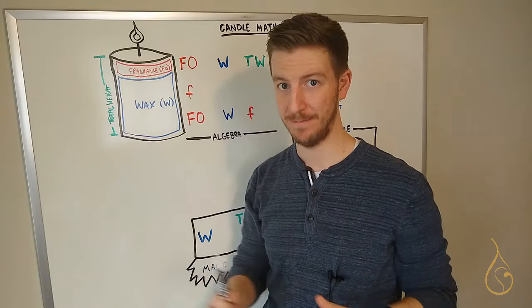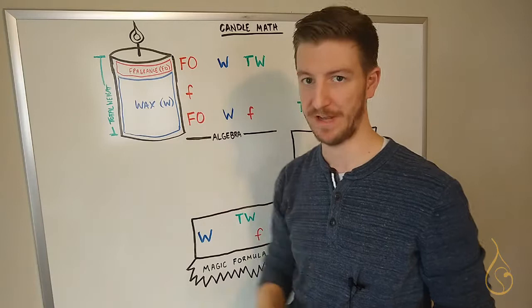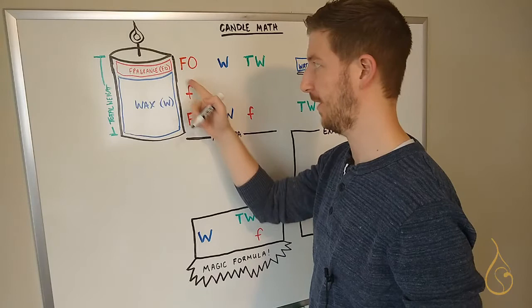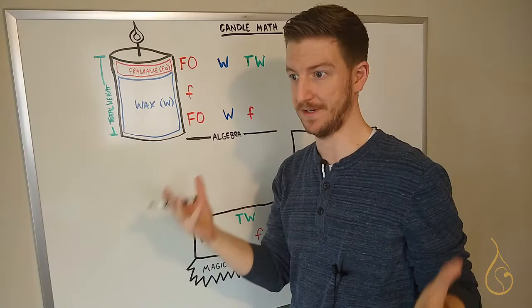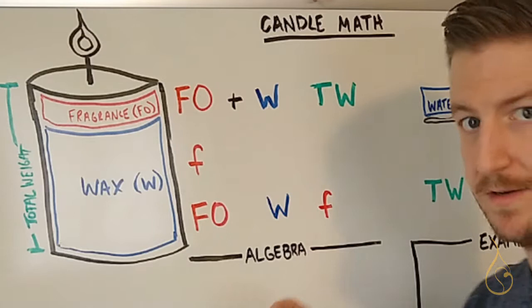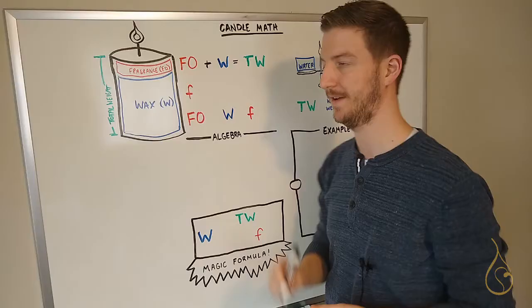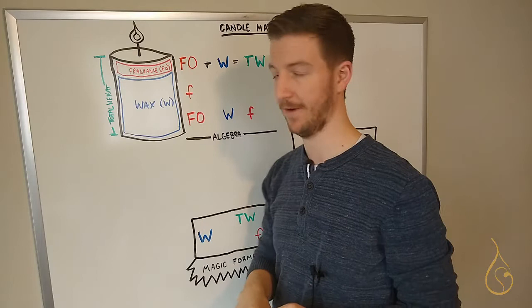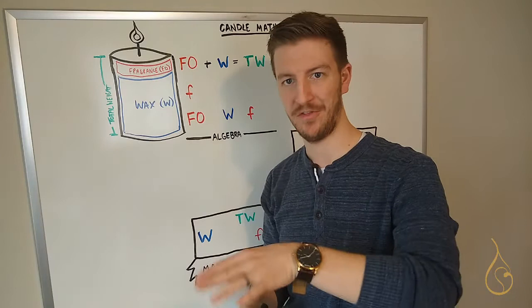Now in candle making we measure everything by weight, and I won't get into that, but if you want a deeper dive on that you can check out that video. But if we look at a candle in terms of what it weighs, you've got the total weight. So you've got fragrance oil, which I've outlined in red here, you've got wax, which I've outlined in blue, and the total weight of the container is as simple as the fragrance oil (FO) plus the wax weight (W), that equals total weight (TW). If we know the total weight, we can work backwards and figure out exactly what amount of wax and what amount of fragrance we need to fill that container. We'll talk about how to figure out the weight in a second here. We'll use water as our main tool there.